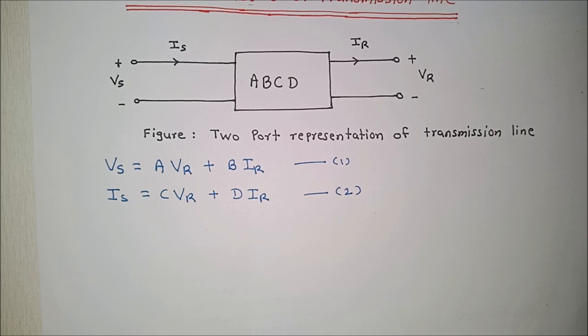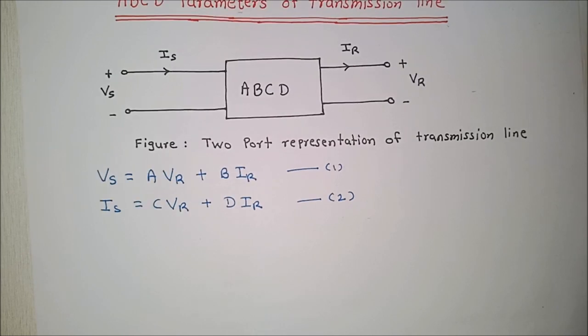Vr, Ir are the receiving end voltage and current respectively, ABCD are the line parameters.